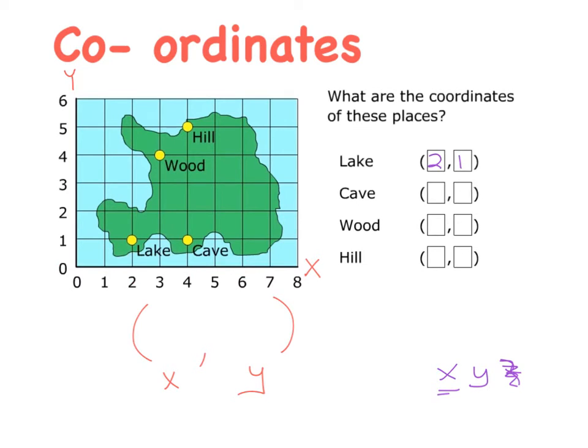The cave is next. So we go along as far as four on the X axis and up as far as one on the Y axis. So it is the point (4, 1). The wood is along as far as three, up as far as four. So it is (3, 4). And the hill is along as far as four, up as far as five. So that is the point (4, 5).